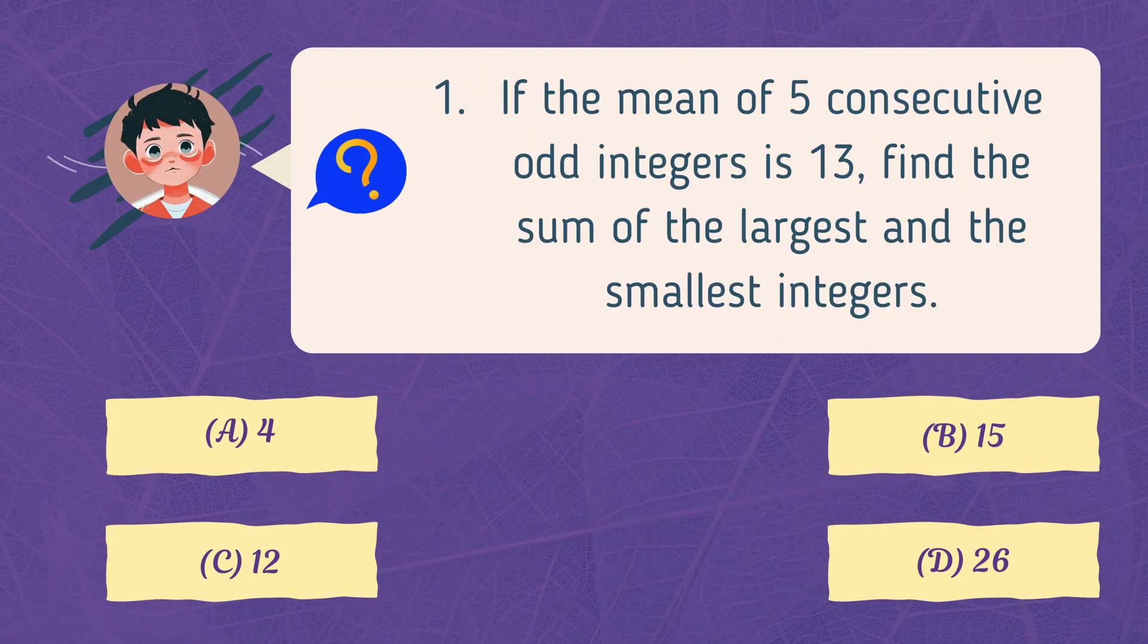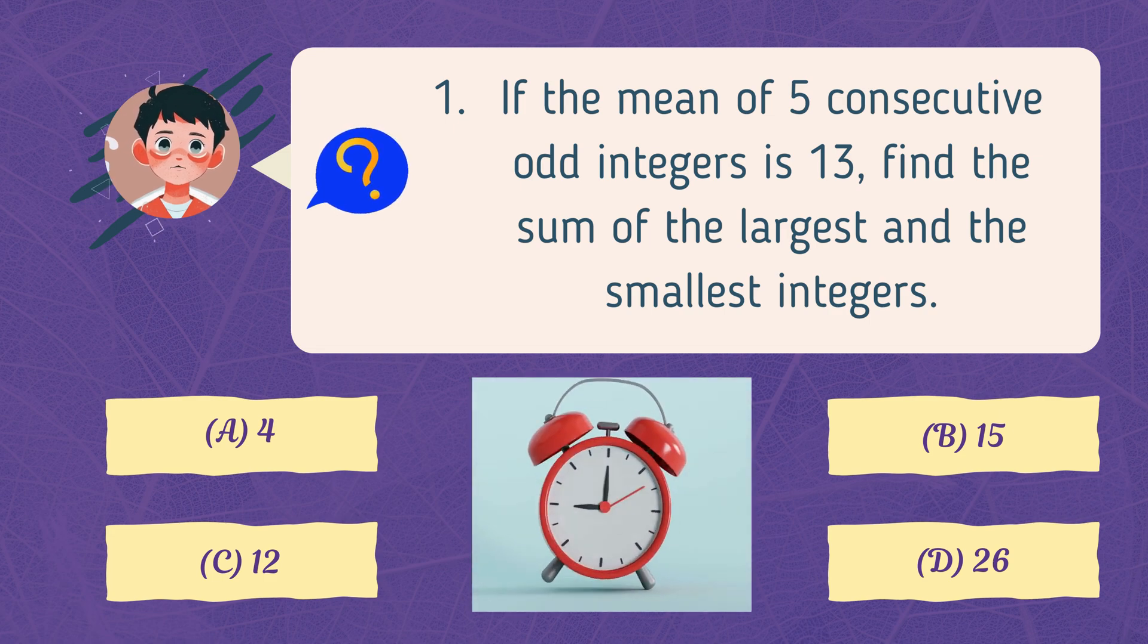If the mean of 5 consecutive odd integers is 13, find the sum of the largest and the smallest integers.